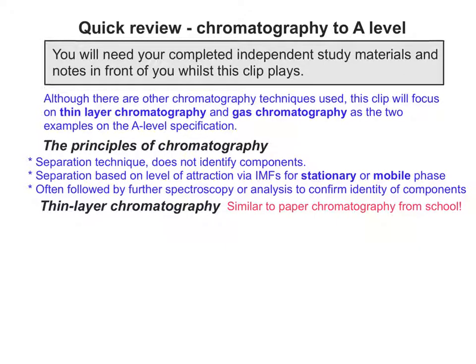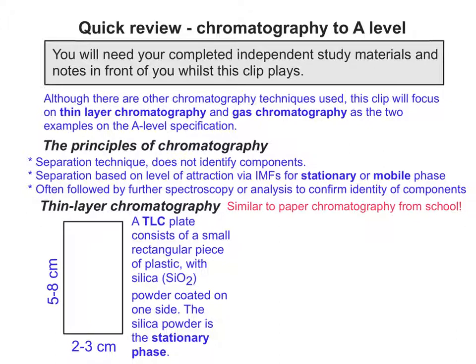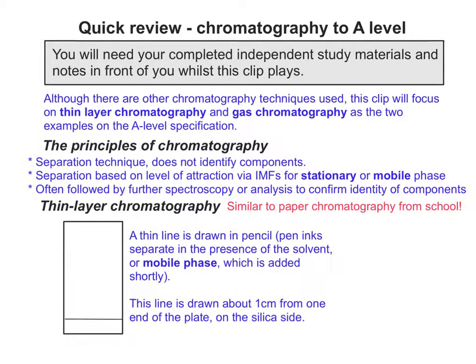Let's look at thin layer chromatography. Most people find it quite easy to understand because it's similar to the paper chromatography that most people end up doing at school. A TLC plate consists of a small rectangular piece of plastic that has silica powder coated on one side, and the silica powder acts as the stationary phase. A thin line is drawn in pencil near to one end of the plate on the silica side, because you want the components to be in contact with silica.